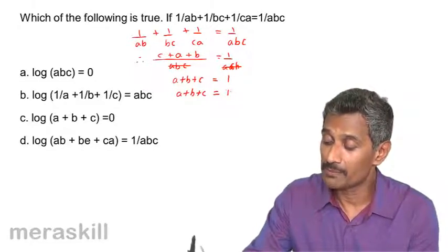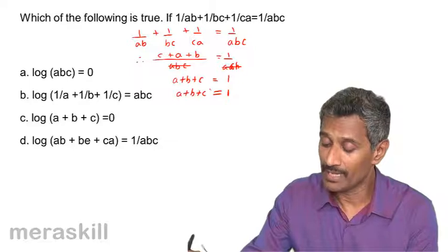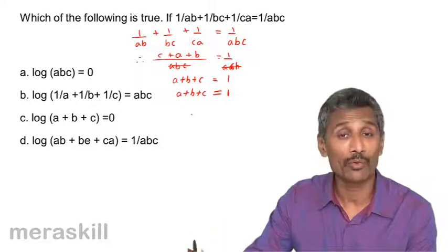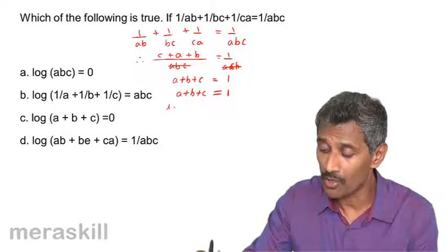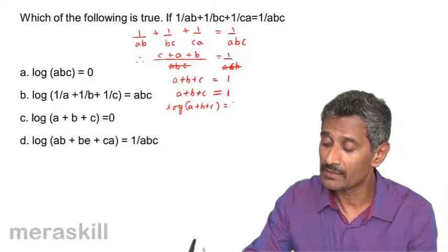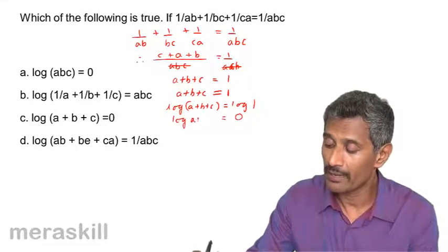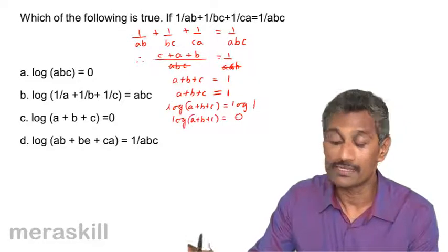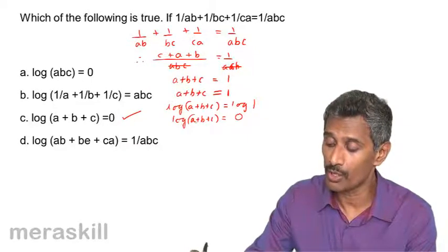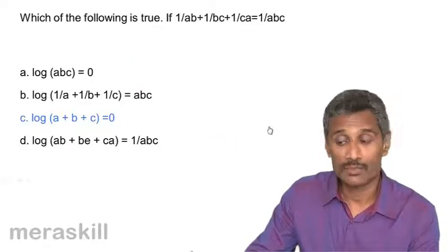Since A + B + C = 1 and the answer choices are in terms of logarithms, we take log of both sides: log(A + B + C) = log 1 = 0. So log(A + B + C) = 0 is the right answer. Checking confirms this is correct.